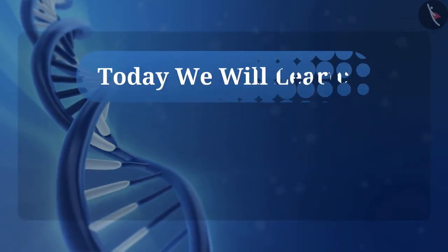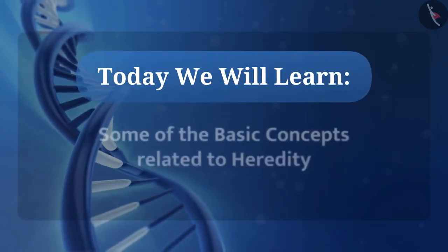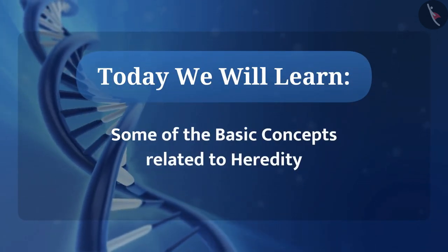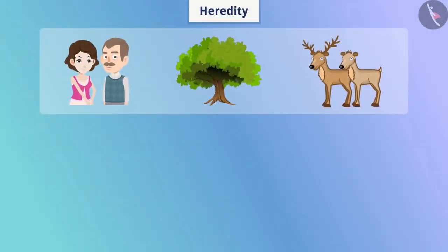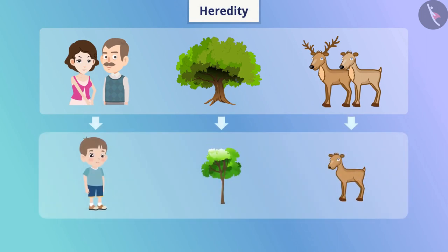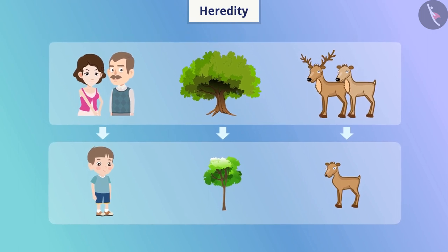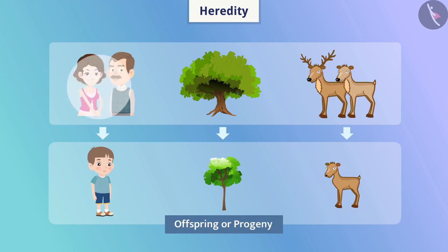Today we will learn some of the basic concepts related to heredity. Each organism generates another organism similar to itself through the process of reproduction. We call the new organism offspring or progeny, and the organism that produces offspring is called parent.